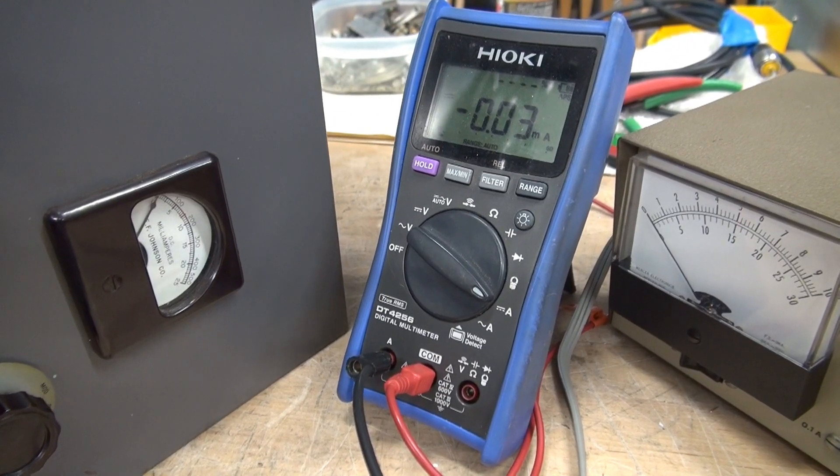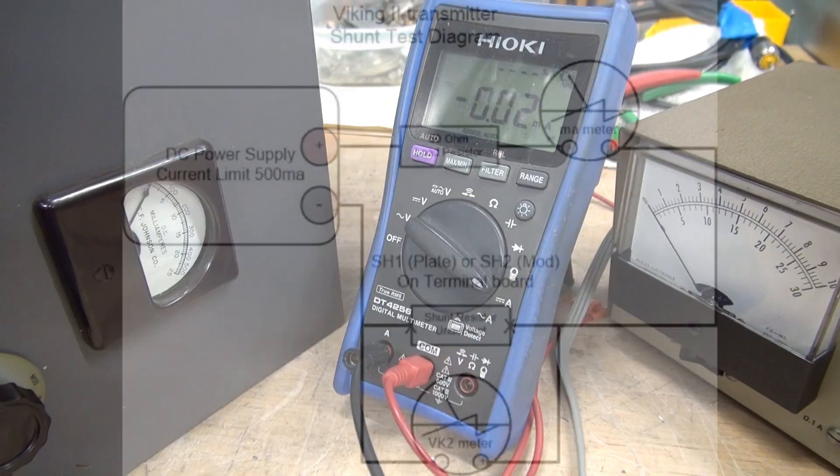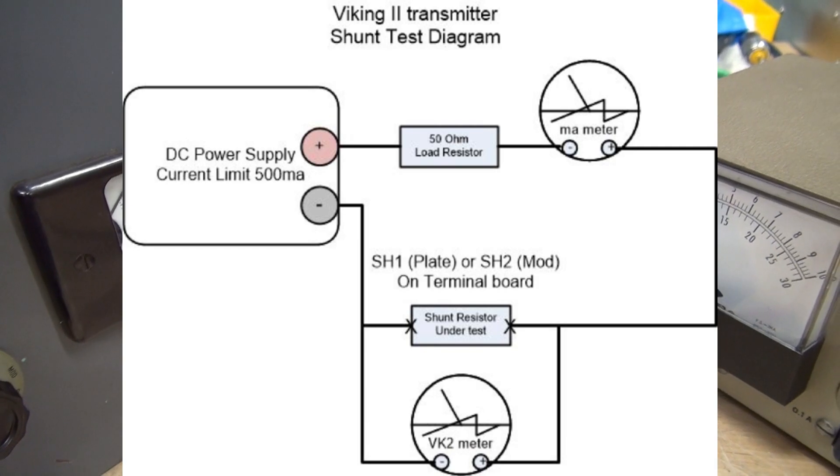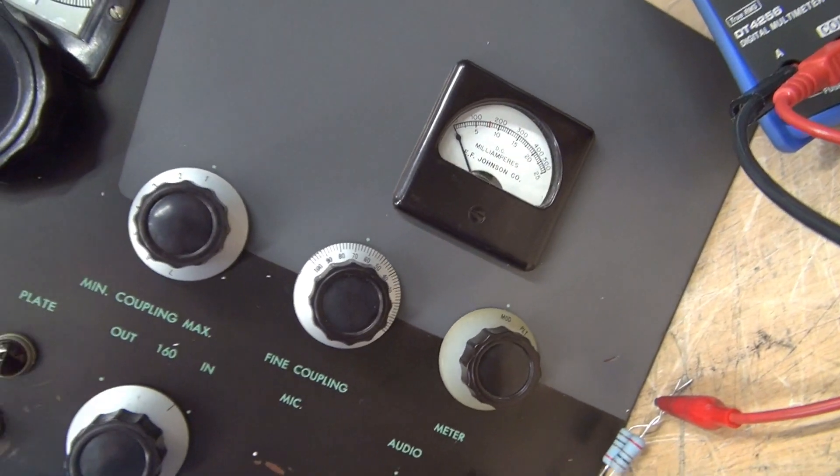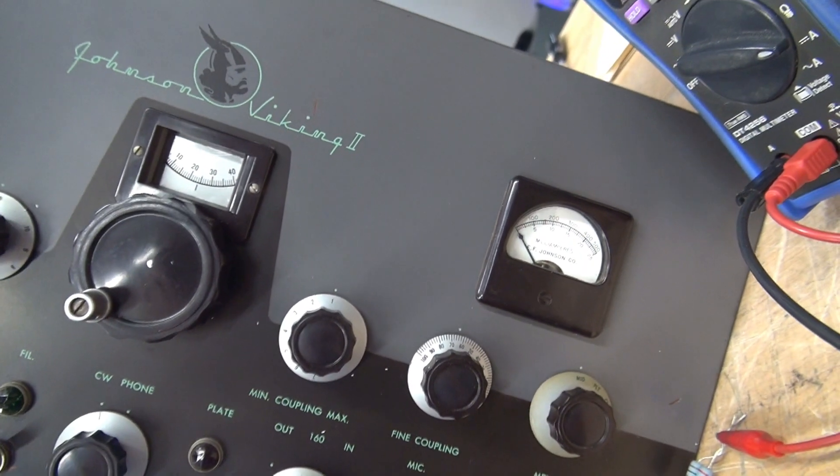So that's all there is to it. I'm going to post a diagram so you guys can make this little test setup yourself and check the accuracy of the shunts on your Johnson Viking 2.